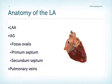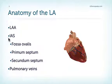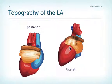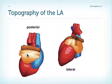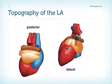The left atrium is located cranially and posteriorly. It consists, aside from the left atrium itself, of the left atrial appendage, the intra-atrial septum with the fossa ovalis, the primum septum and the secundum septum, and the pulmonic veins which enter the left atrium from both sides. Viewed from behind, we can see that the pulmonic veins enter the left atrium in pairs — the left pulmonic veins and the right pulmonic veins. From the lateral side, the left atrial appendage is in close proximity to the left ventricle, the lateral wall, and the anterior wall.